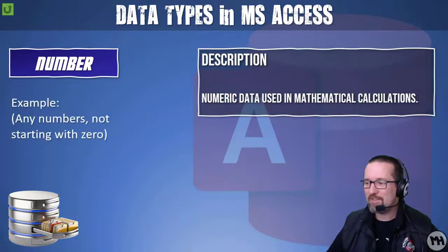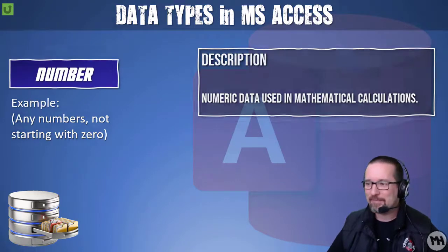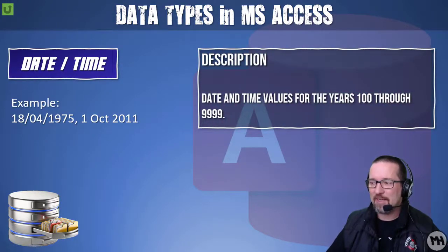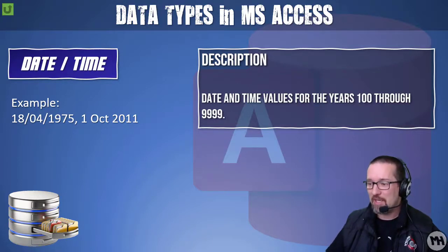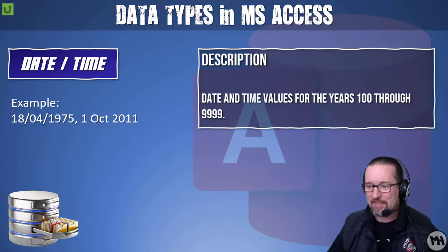Number is just a number — anything that doesn't start with a zero. Date and time covers date and time values from the year 100 all the way through to 9999, and it can be displayed in different formats.